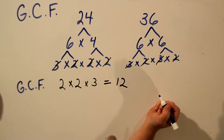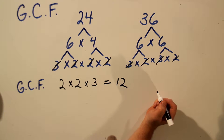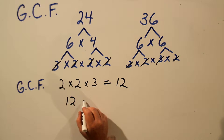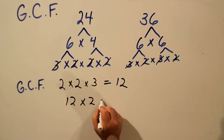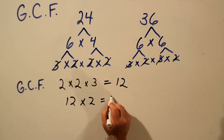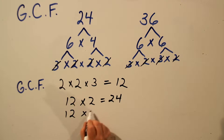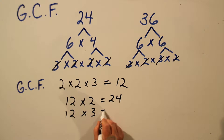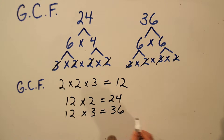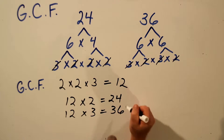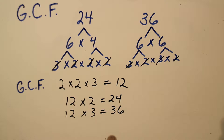12 is the greatest common factor for 24 and 36. And to check that: 12 times 2 is 24, and 12 times 3 is 36. In fact, 12 is the largest number that will go evenly into both 24 and 36, so it's called the greatest common factor.